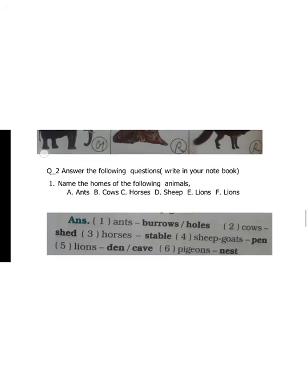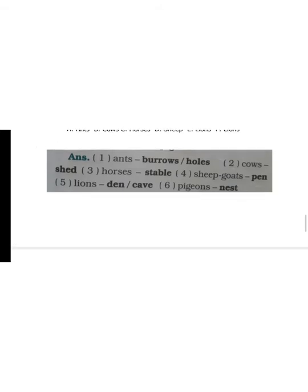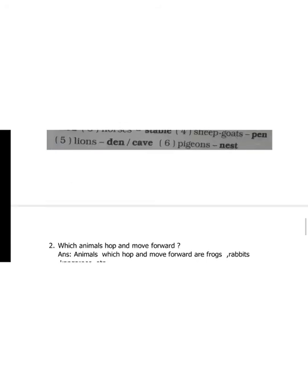Name the homes of the following animals. Here I have to give you some options, where are the animals, you have to write. So ants, cows, horses, sheep, lions, where are they? Ants are in the burrows or holes. Cows are in the shed. Horses in the stable. Sheep and goats are in the pen. Lion in the cave. Pigeons in nest on the tree.